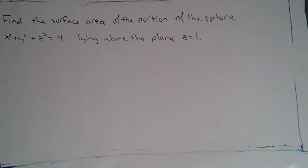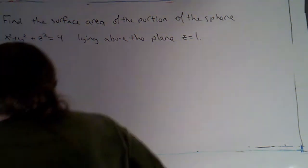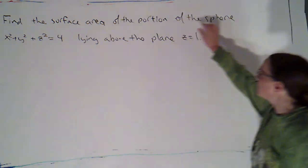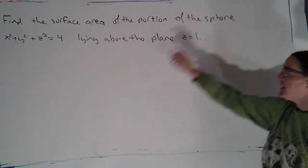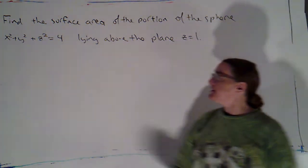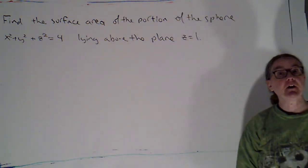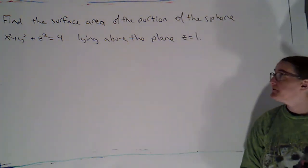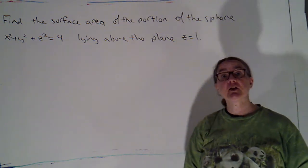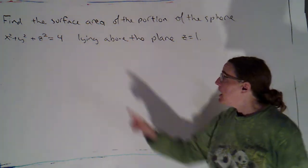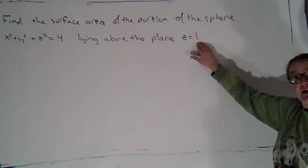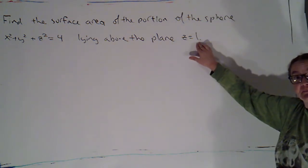Alright, got another problem on the board here. I want to find the surface area of the portion of the sphere x squared plus y squared plus z squared equals 4 — that's the sphere centered at the origin of radius 2 — specifically the part that lies above the plane z equals 1.